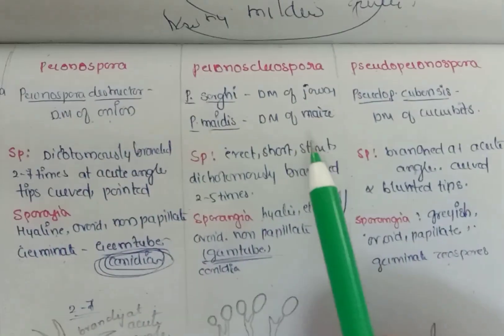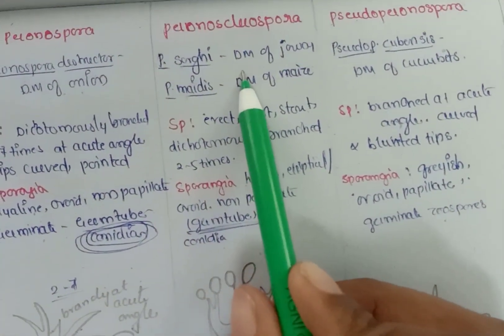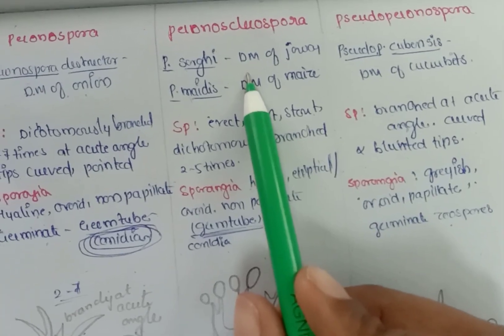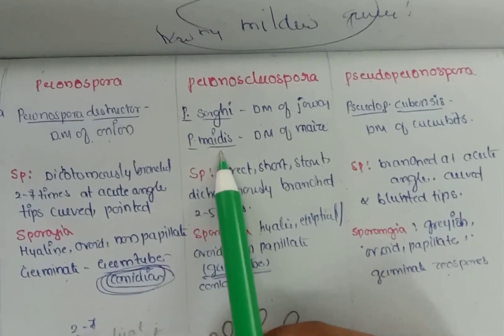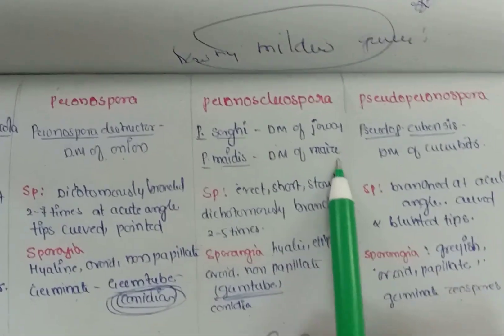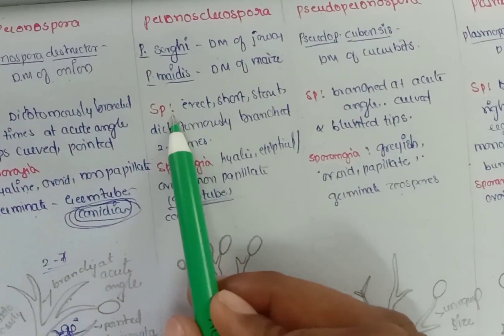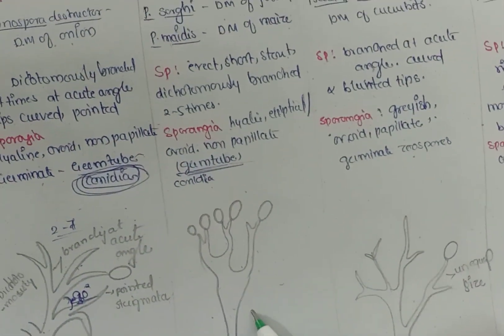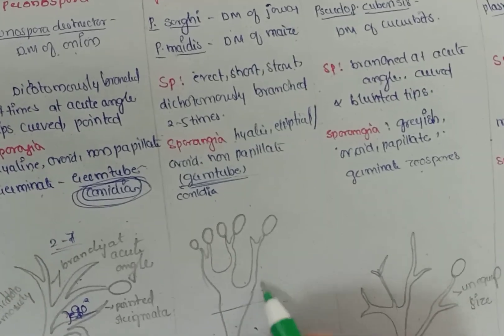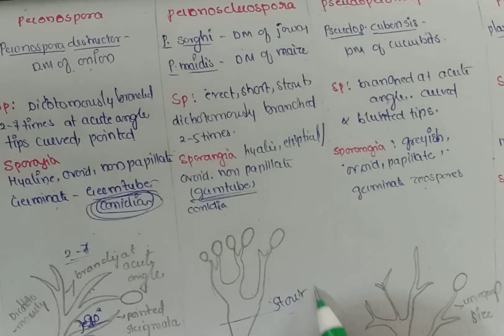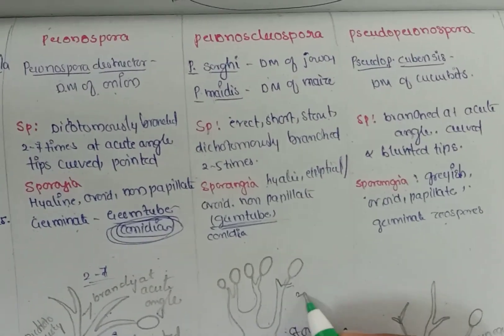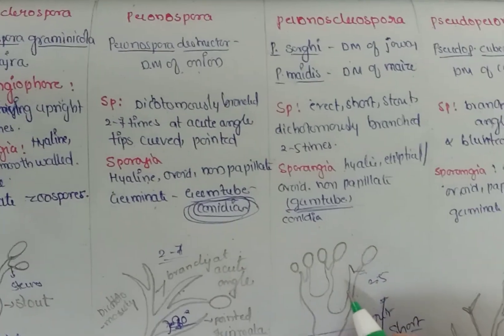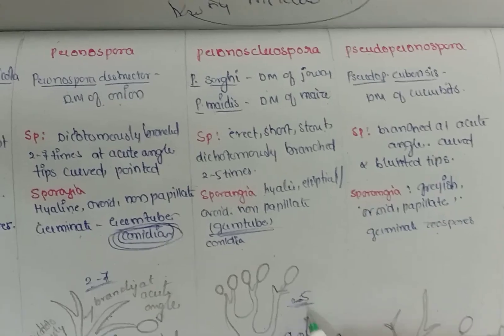Next is Peronosclerospora — caused by Peronosclerospora sorghi, which causes Downy Mildew of Jowar (sorghum), or Peronosclerospora maydis, which causes Downy Mildew of Maize (also called leaf shedding). The sporangiophore is erect and stout. It is also dichotomously branched — 2 to 5 times — compared to Peronospora which branches 2 to 7 times.